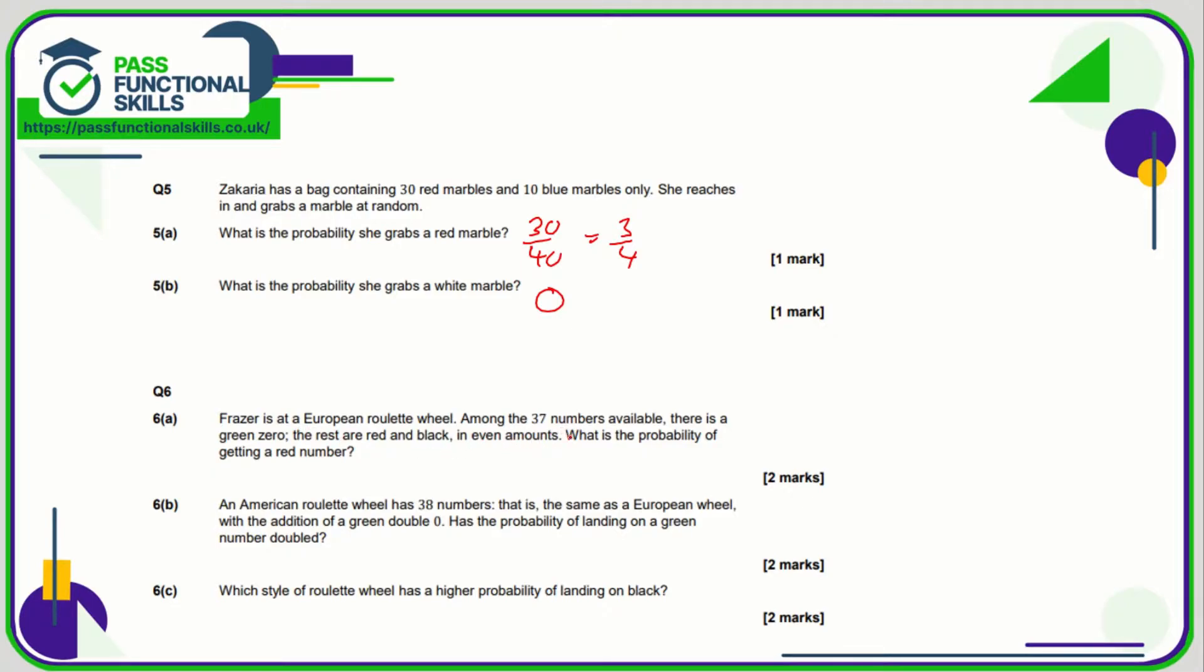Question number six: So there are 37 numbers available. There's a green zero and the rest are red and black. So what's the probability of getting a red number? So it's not 50-50 because of this irritating one green one. So out of the 37...